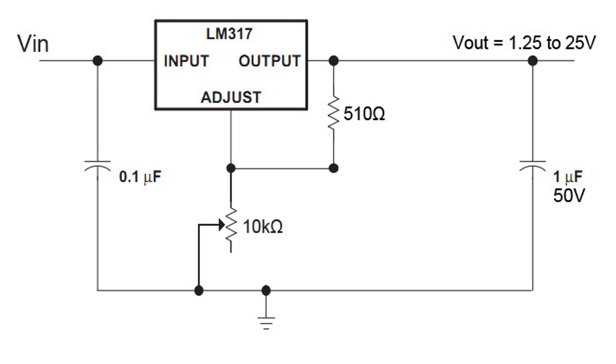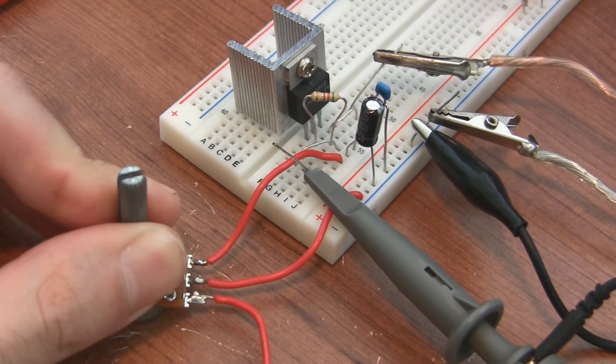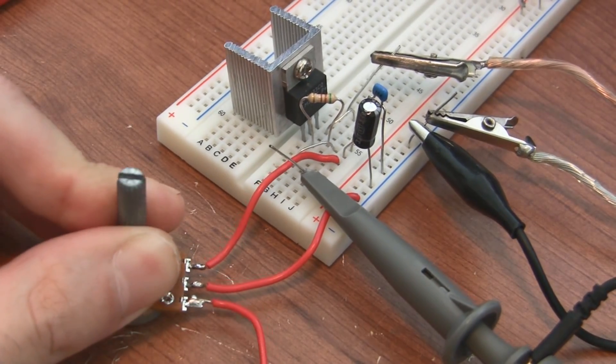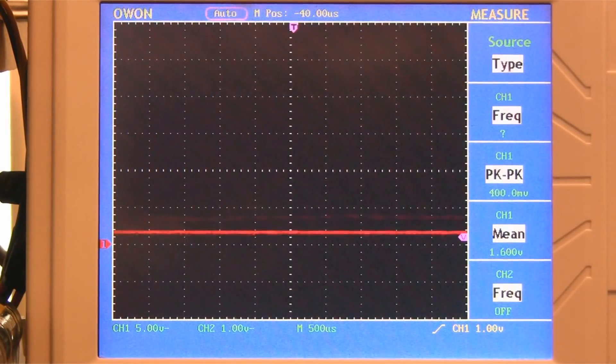Let's make R1 510 ohms and let's use a 10 kilo ohm variable resistor for R2. Doing this gives us a constant voltage supply that we can adjust from 1.25 volts to 25 volts.